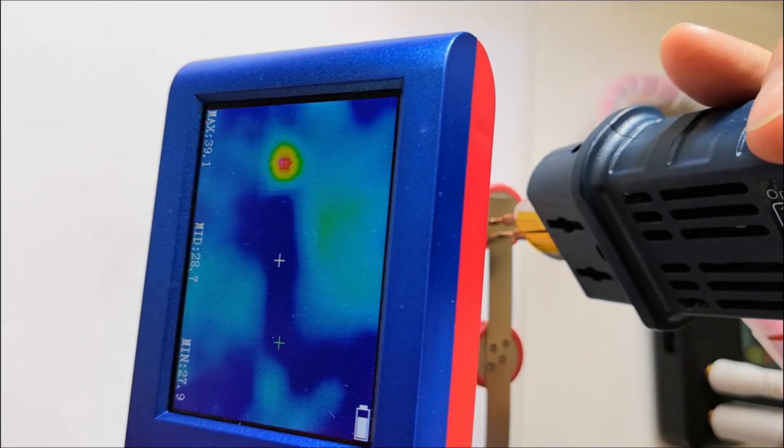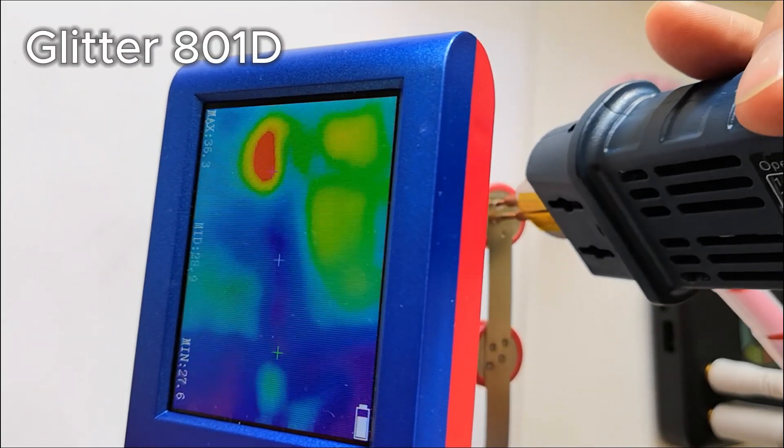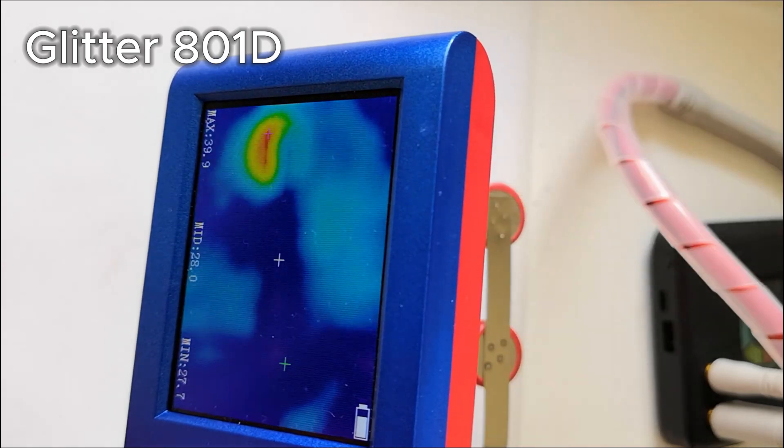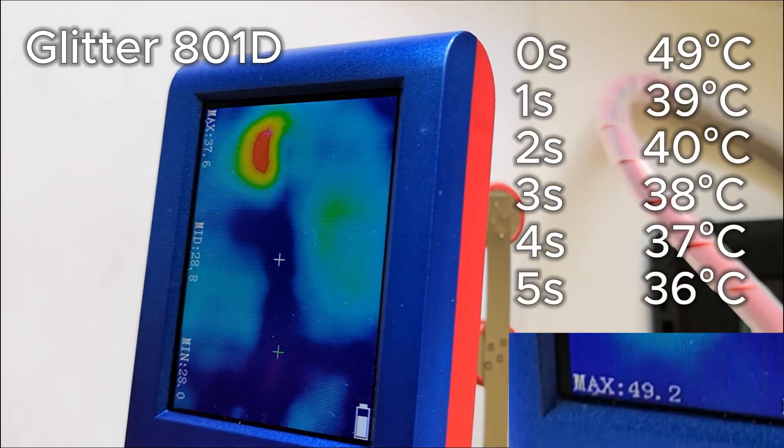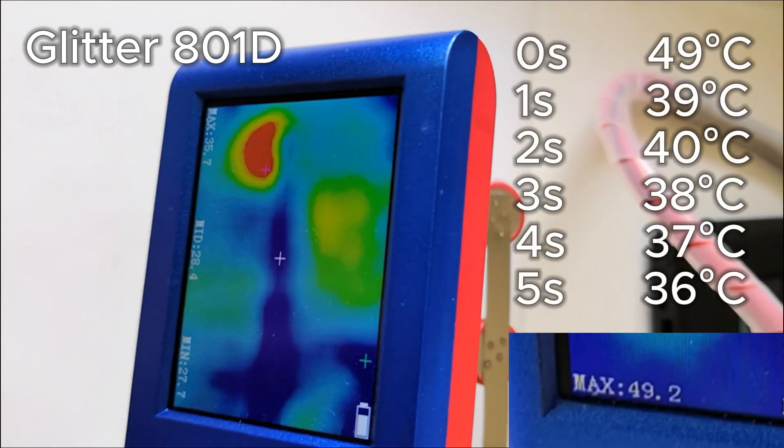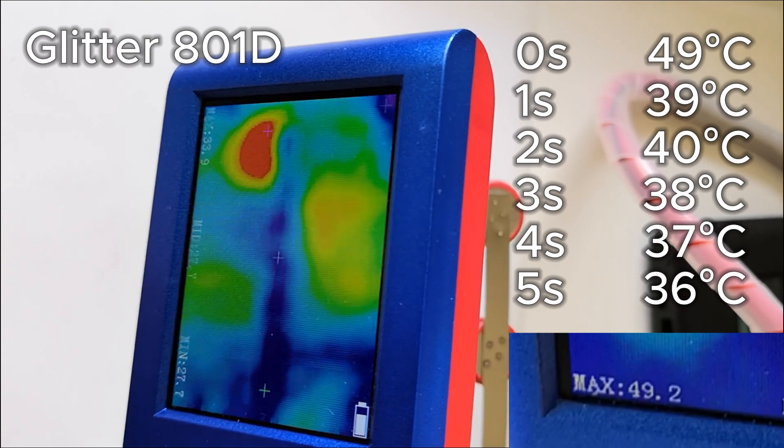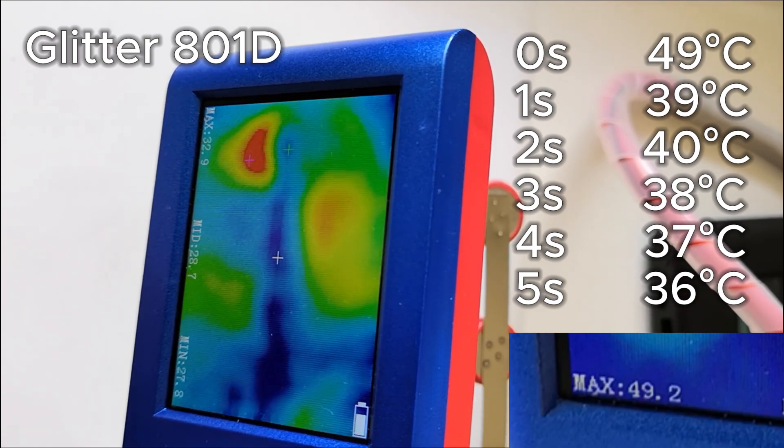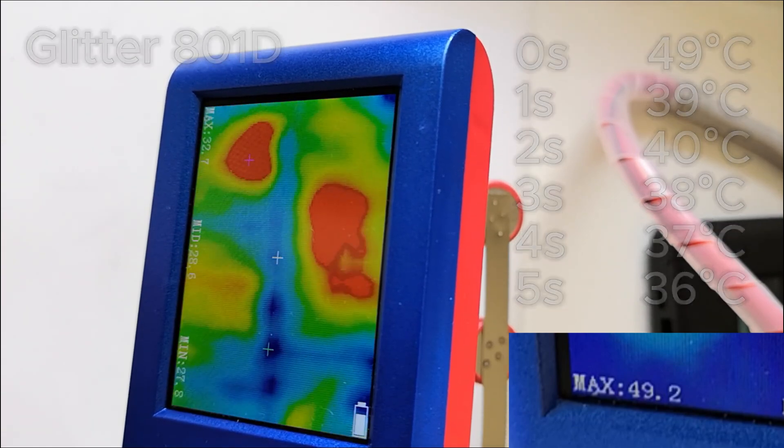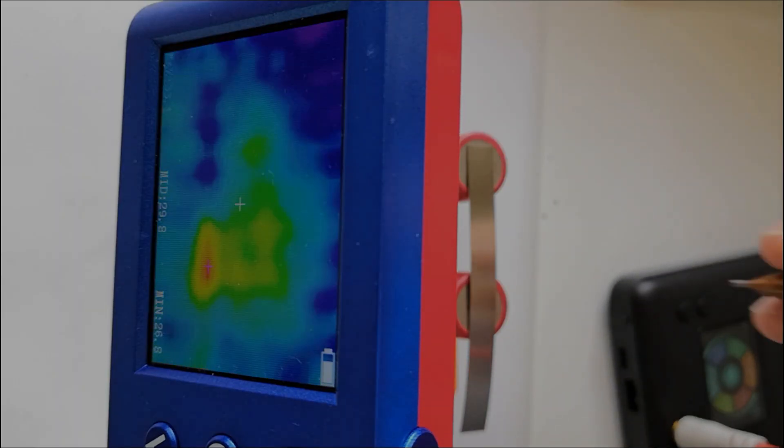Glitter on the other hand only heats the battery to 49 degrees. Thanks to the super capacitor, it delivers a high current in a short burst. That keeps the battery much cooler. So the weaker device actually heats the battery more.